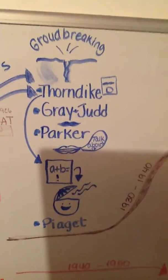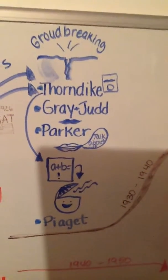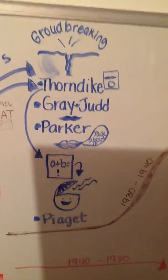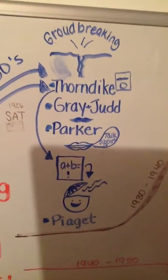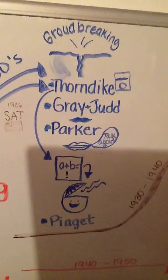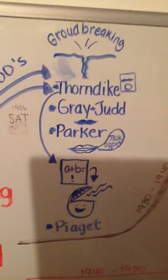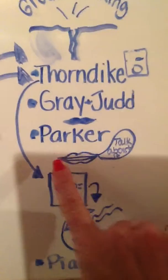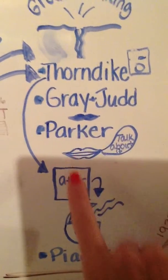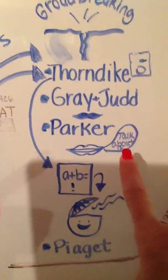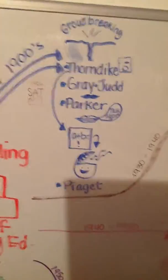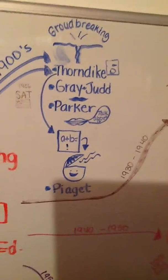Gray and Judd believed silent reading was more practical. Then Parker was the one that believed oral expression helped independent reading. If you see I have the closed mouth and the open mouth for them, the closed mouth for silent reading. Parker is the one that wanted to talk about it, which I thought was very important because we need to talk about our reading and think through it.